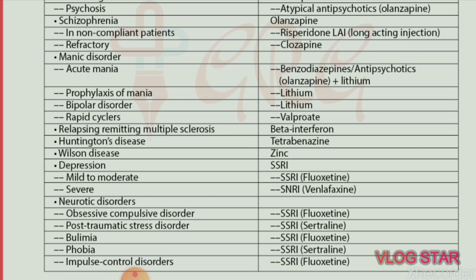Post-traumatic stress disorder (PTSD) — drug of choice is SSRI. Bulimia — drug of choice is SSRI, specifically fluoxetine. Phobia — drug of choice is SSRI, specifically sertraline. Impulse control disorders — drug of choice is SSRI, specifically fluoxetine.